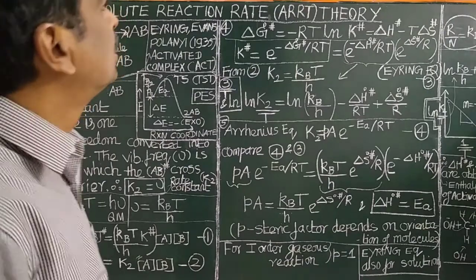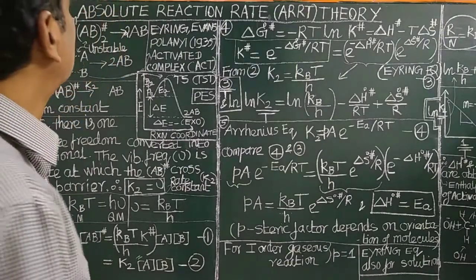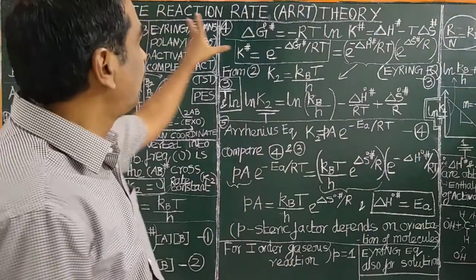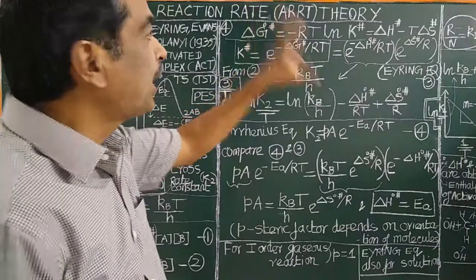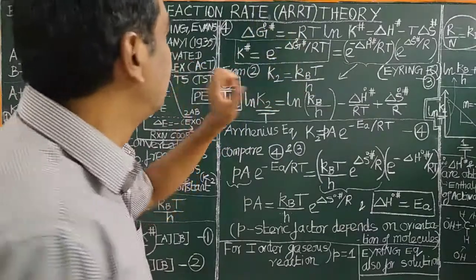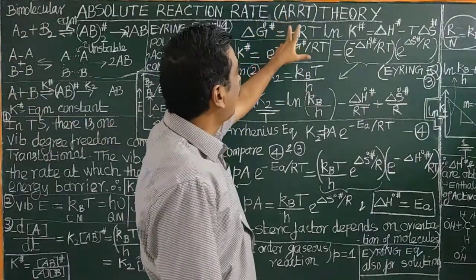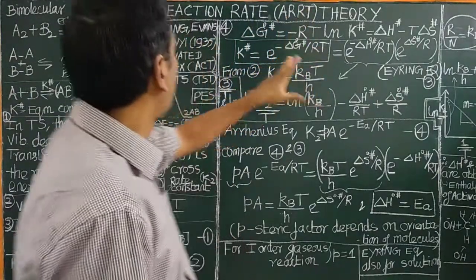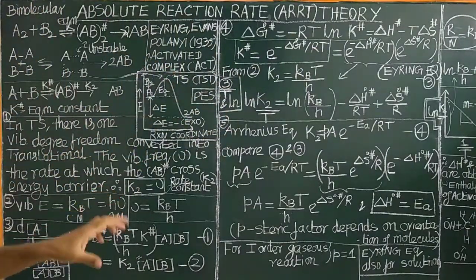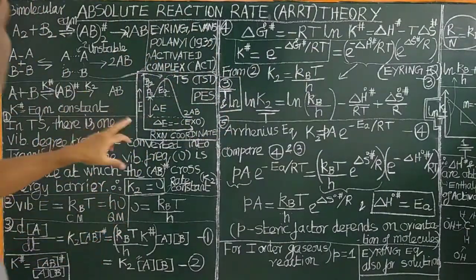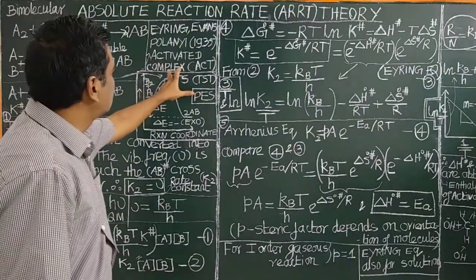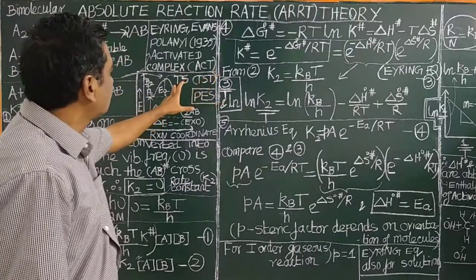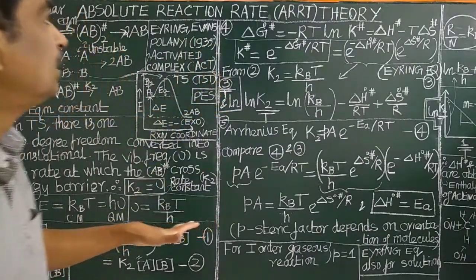Good morning, welcome. We are going to talk about Absolute Reaction Rate Theory. It is also called ART — Absolute Reaction Rate Theory. It is also called Activated Complex Theory or Transition State Theory.